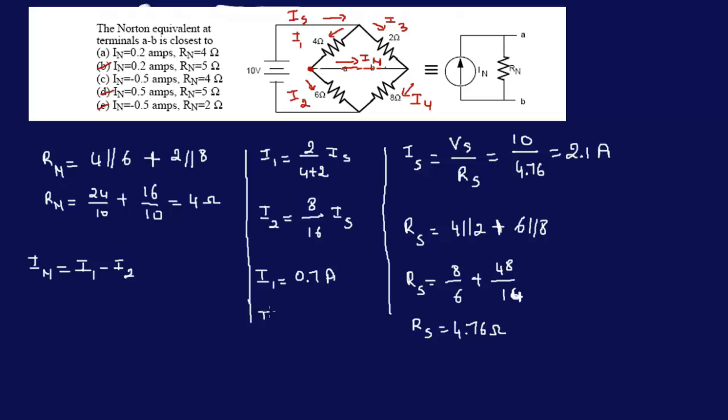My I2 is 8 over 14 times 2.1. 8 over 14, instead of 16. I don't know why I wrote 16 - 8 plus 6 is 14, not 16. I'm glad I caught that though. So I have 1.2 amps.